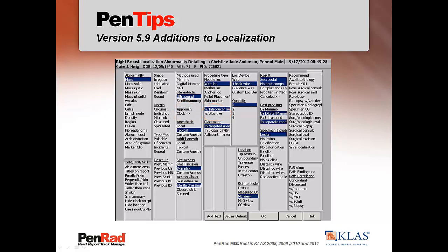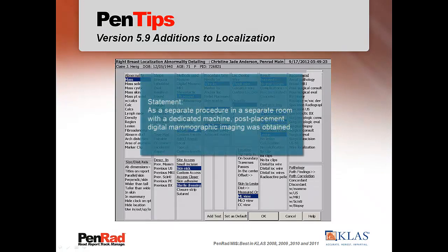Added the ability to specify that post-localization imaging was performed in a separate room as a separate procedure to capture an additional fee when multiple imaging modalities are used. A statement example might be: as a separate procedure in a separate room with a dedicated machine, post-placement digital mammographic imaging was obtained.